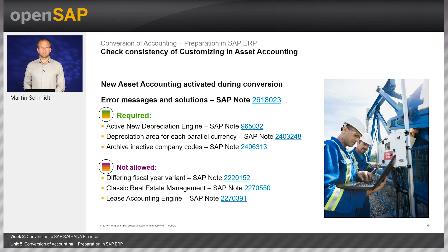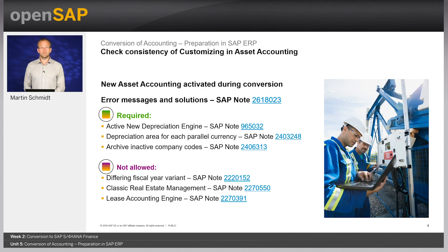Besides mandatory prerequisites, you need to be aware of important limitations. New asset accounting does not support depreciation areas with a fiscal year variant that has different starting and finishing dates. If your SAP ERP has such a fiscal year variant assigned to ledgers used in asset accounting, you will not be able to continue with conversion. A possible solution involves introducing an additional ledger, which typically requires a separate new GL migration project. Additionally, classic real estate and the lease accounting engine do not support new asset accounting.